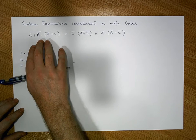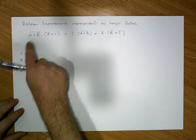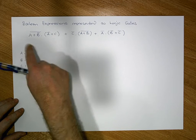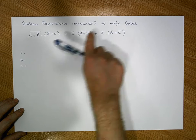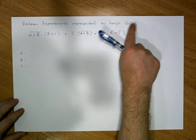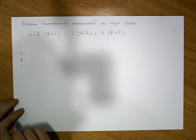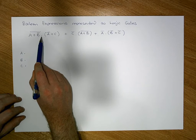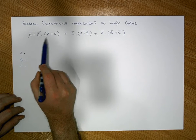We'll take our first expression and parse it from left to right, building up the sub-logic gates to represent this particular expression. We can see from this expression that we have a main AND, a left upper AND, and a right upper AND.